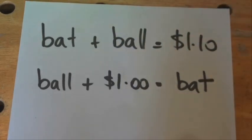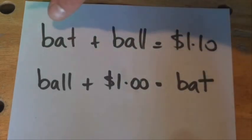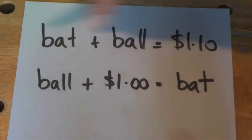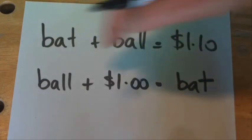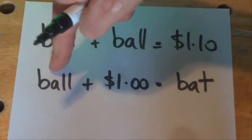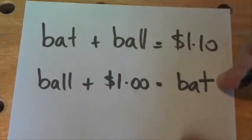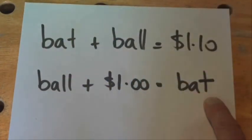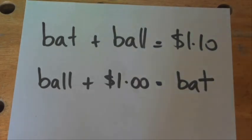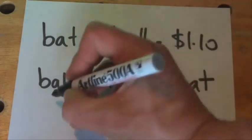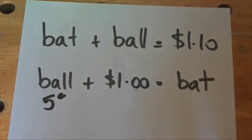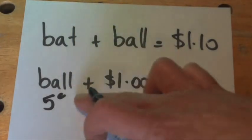If we think about the $0.10 answer: $0.10 for the ball plus $1 for the bat satisfies the first condition. But if the ball is $0.10, the bat would have to be $1.10, and that doesn't satisfy the second condition. So the actual answer is $0.05 for the ball.